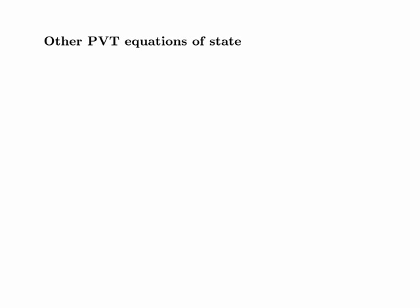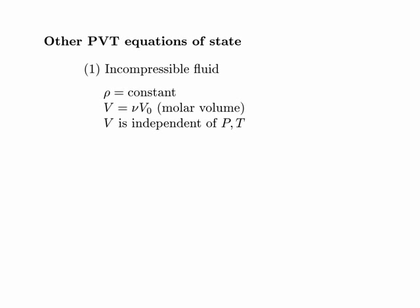Let's consider PVT systems described by other equations of state. For an incompressible fluid like a liquid, it's very hard to change the volume, so the density is pretty much constant under a wide variety of conditions. The volume is just the number of moles times a fixed molar volume, meaning V is independent of P and T. So the two independent variables are P and T, and the volume is fixed.